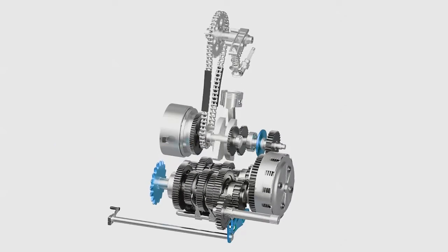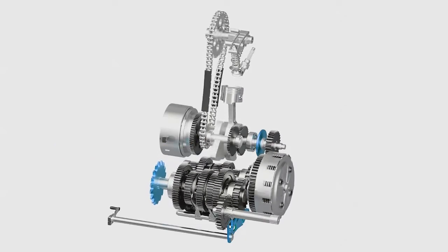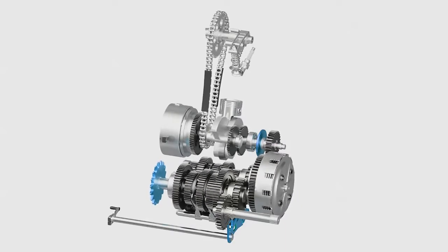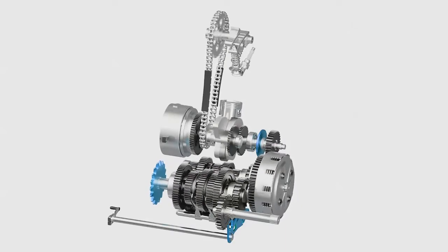The clutch helps in smooth transfer of power from the crankshaft to the transmission system. The transmission system helps in altering the speed and torque as per our requirement.